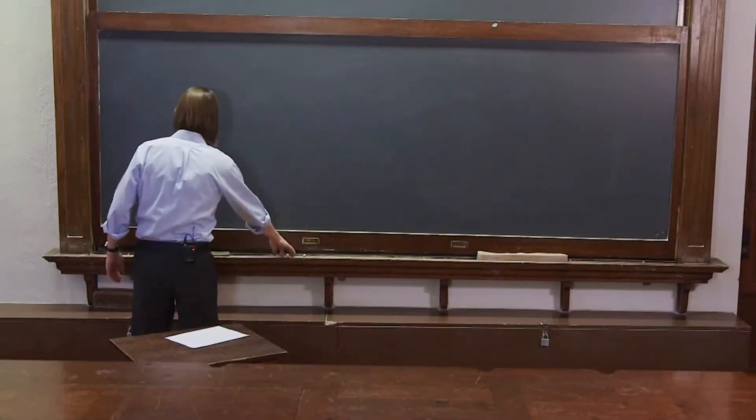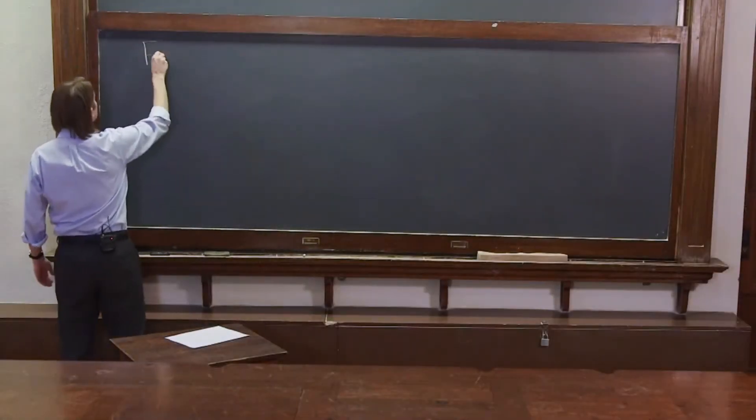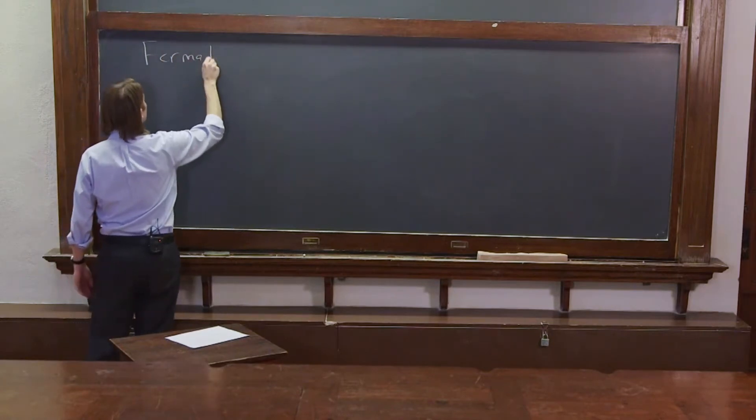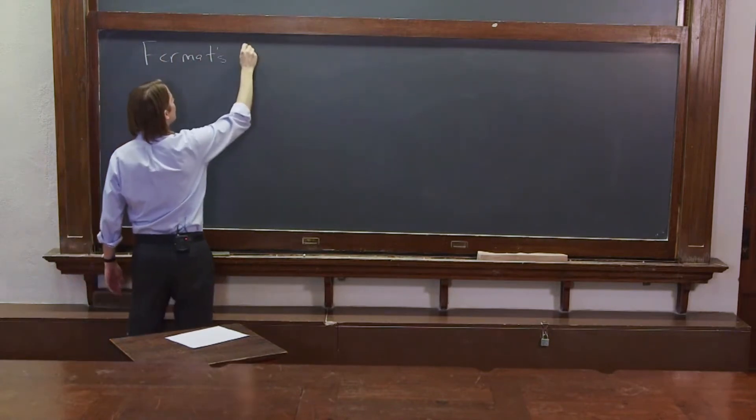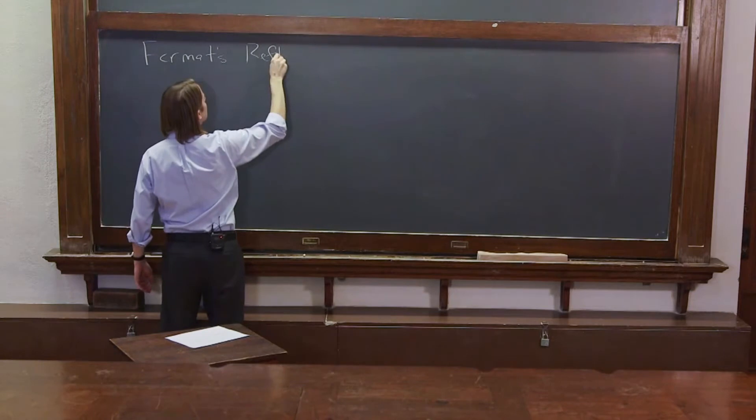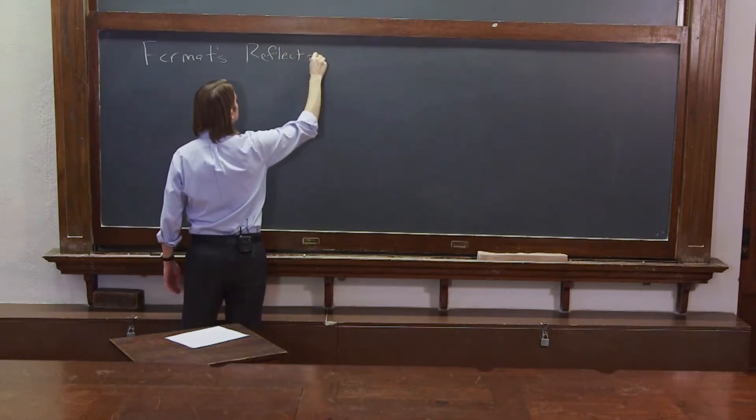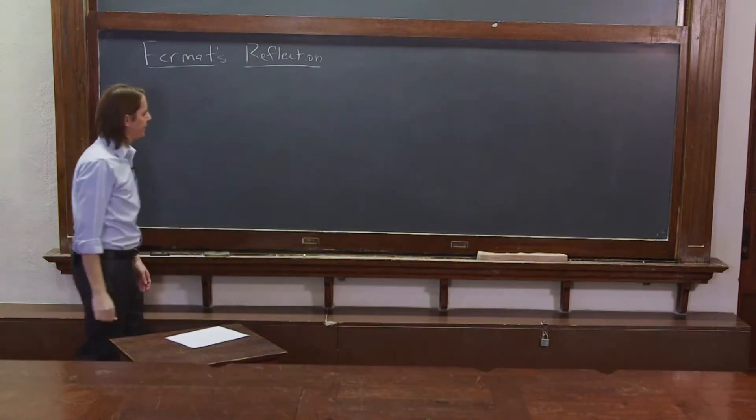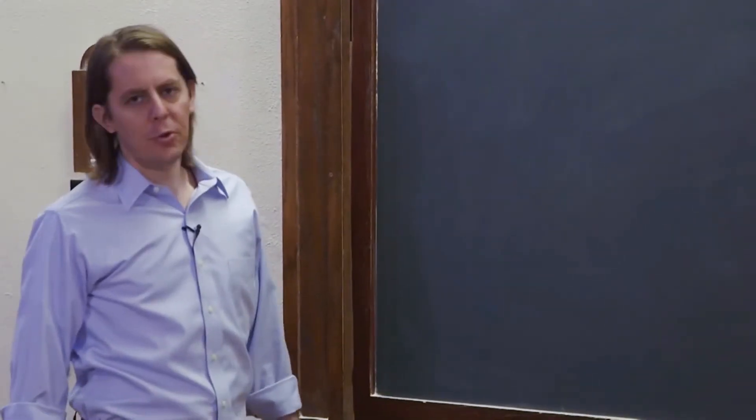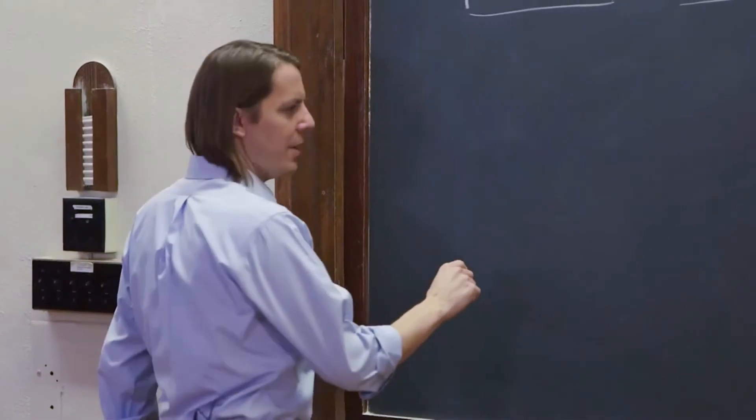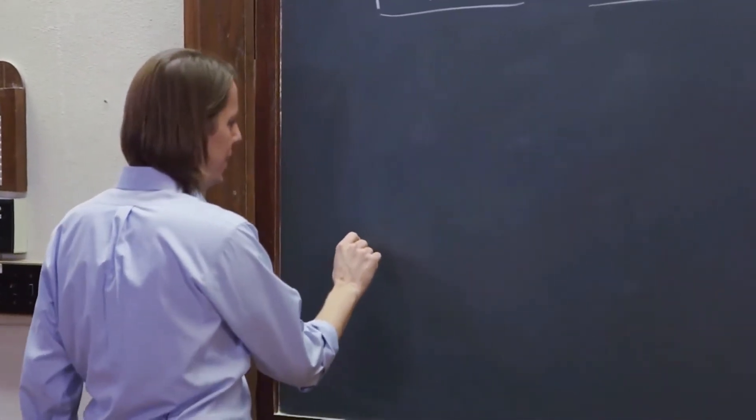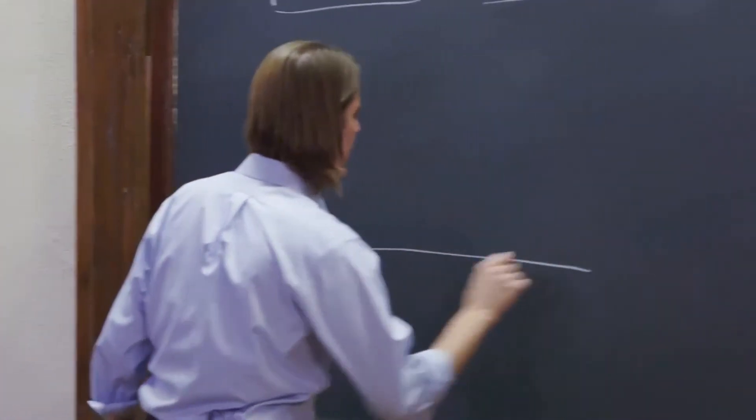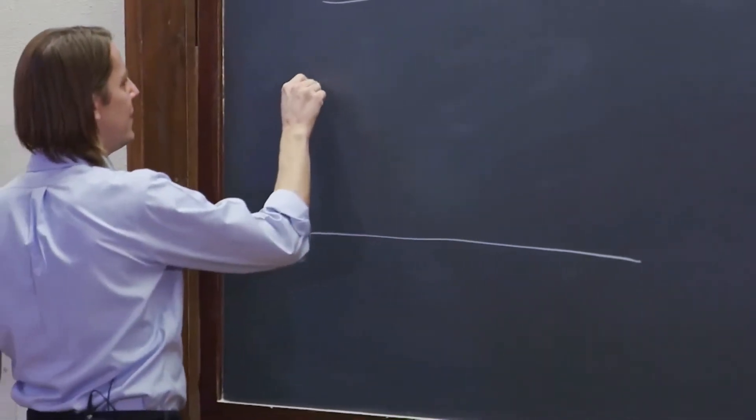Let's apply Fermat's principle to see what happens with reflection. So Fermat's reflection. We know the law of reflection is that the angle of incidence equals the angle of reflection, and we are going to see if he really finds that that is true.